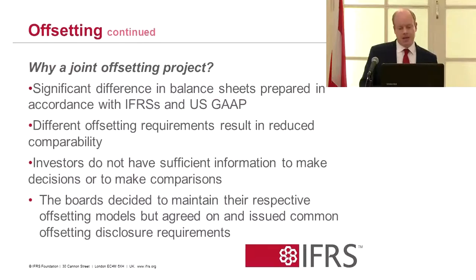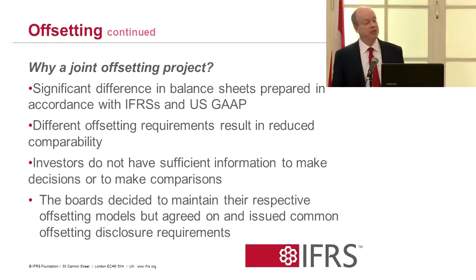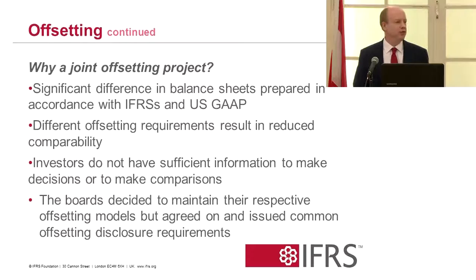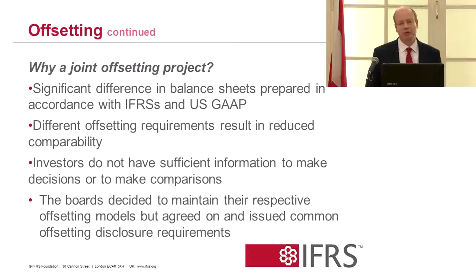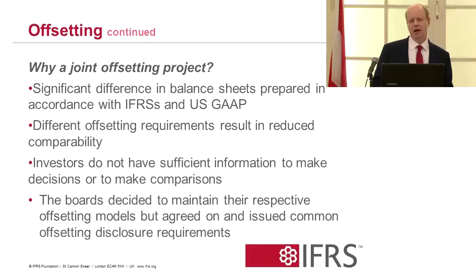The whole area of offsetting is one where the IASB has spent a lot of time with the US Financial Accounting Standards Board, trying to achieve convergence. Unfortunately, we didn't actually get there. There are significant differences in balance sheets when comparing IFRS and US GAAP, and many users say that different offsetting requirements result in reduced comparability. One bank can report several hundred billion assets lower for exactly the same instruments under US GAAP compared to IFRS, which clearly makes it hard for investors to make good decisions.